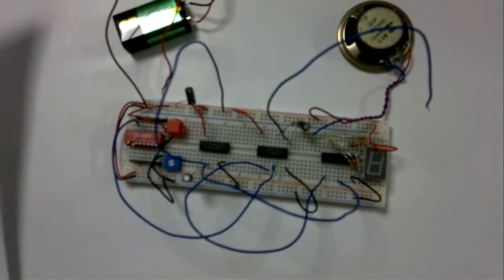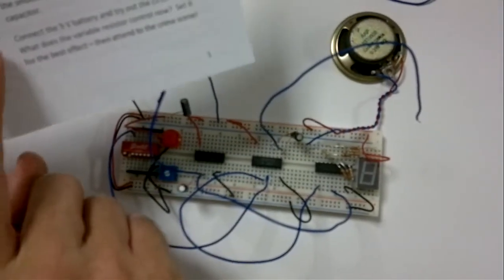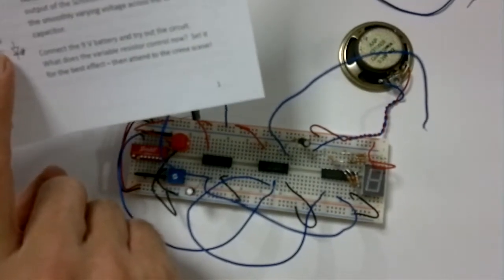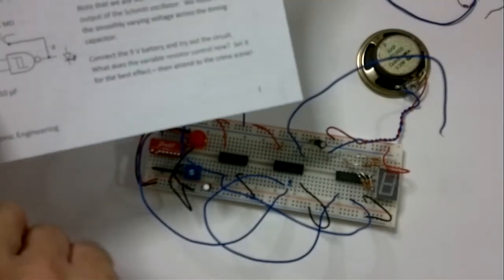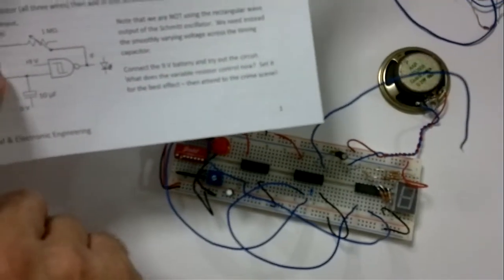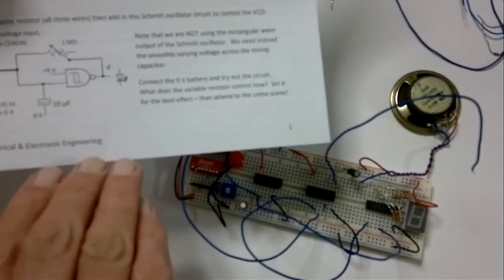And then you would normally say, oh right, we've got our oscillator so we now connect our output to what we want to control. Actually we don't. This is rather strange. We're going to connect the input of the oscillator to what we need to control, because the output is just a rectangular wave.